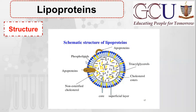In addition to this, the superficial layer also contains non-esterified cholesterol. Esterified cholesterol, which has a fatty acid attached, is present in the core, while non-esterified cholesterol is in the superficial layer. There are also two types of proteins: apo proteins on the surface, and integral apo proteins that penetrate and become an integral part of the structure. This is the structure of lipoprotein.